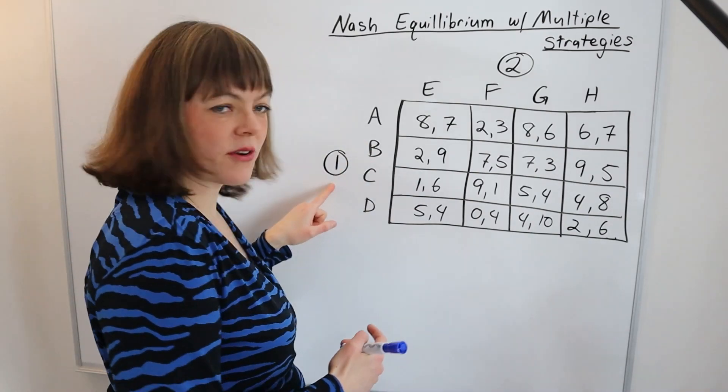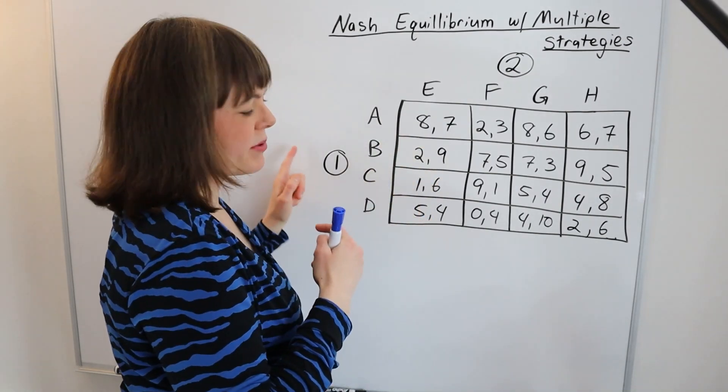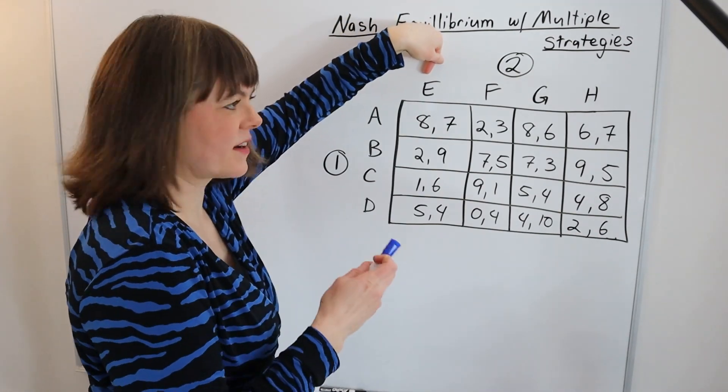You start out with player one's perspective, meaning you're only looking at player one's payouts, but player one is going to check the other player's strategies, and they're going to check them one at a time.